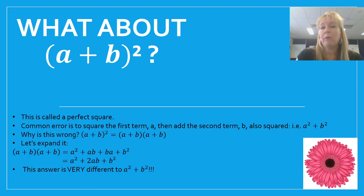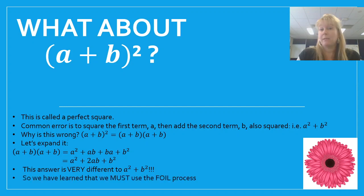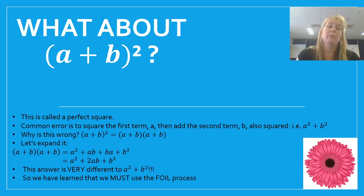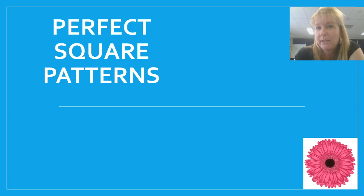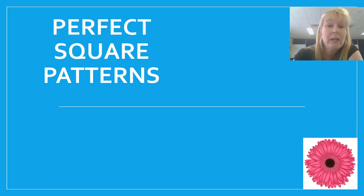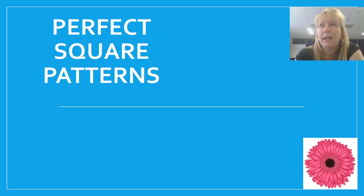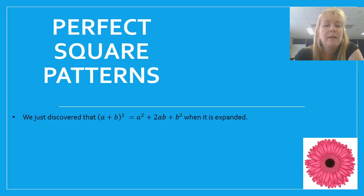There's a pattern that perfect squares form, and it enables us to take a shortcut where we don't even need to use FOIL. So we just discovered that when we expand a plus b in brackets squared, it comes out to a squared plus 2ab plus b squared. They're always going to form a pattern when they're a perfect square. Let's have a look at what that looks like.